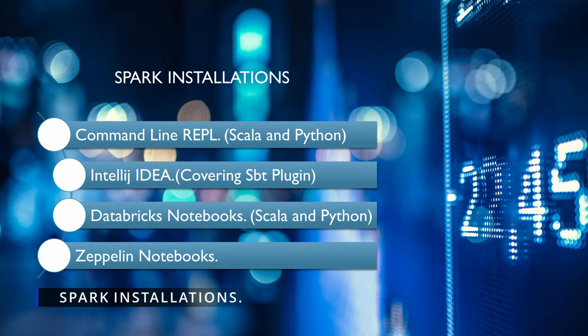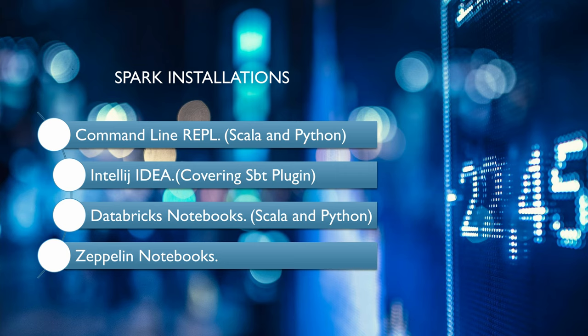The easiest way is to download the Spark binaries and work with a command line version of Spark using the command line REPL. This can be done on Windows as well as Mac or Linux — I'll be showing both Windows and Mac versions for local mode. For Linux, I'll try to download a VM containing a Cloudera or Hortonworks distribution in a later video. The next most common method is to run Spark in an IDE — a popular one like IntelliJ or Scala IDE. I'm going to stick with IntelliJ due to its popularity.